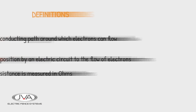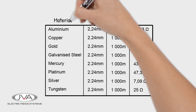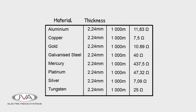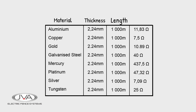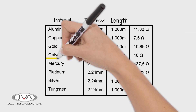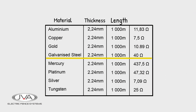There are three different factors which affect resistance: the type of material of which the resistor is made, the thickness of the resistor, and the length of the resistor. Because of its cost effectiveness and durability, we're using 2.24 mm galvanized steel wire in this example, which we know has a resistance of 40 ohms over a 1 km distance.